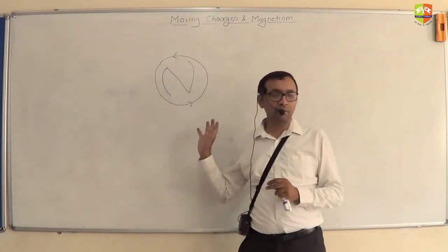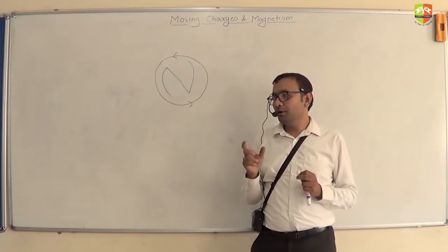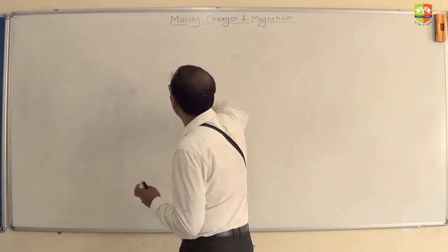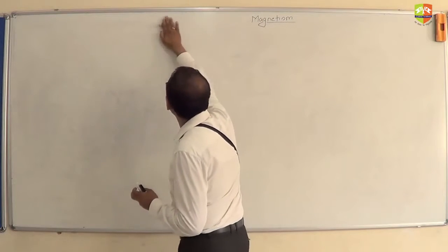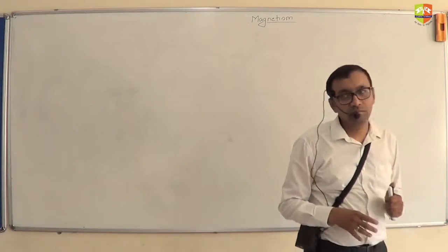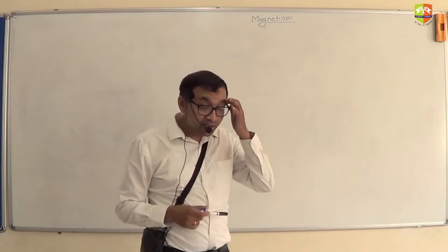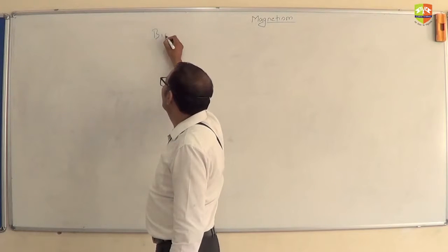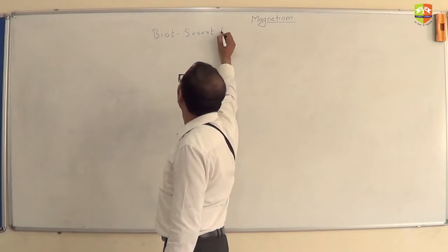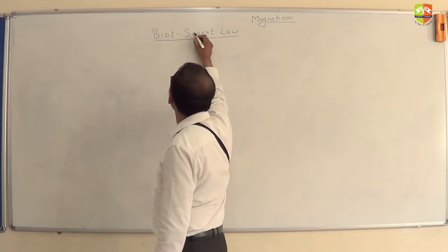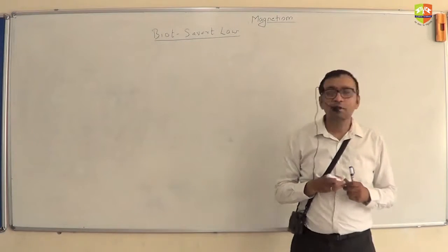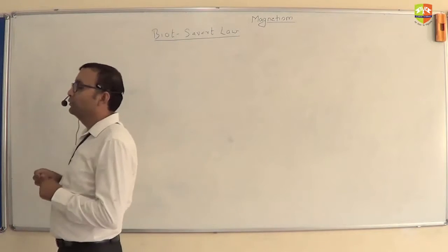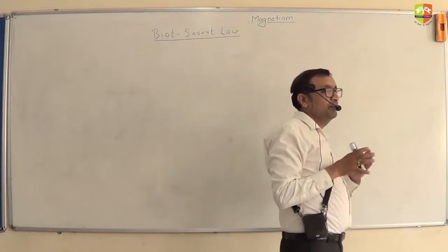So I am looking for a formula for the magnetic field in terms of a known current. This is where the story of magnetism for this chapter starts — the formula for the magnetic field in terms of current. We will divide the chapter into two parts: magnetism and moving charge. This magnetism part starts with a law called the Biot-Savart law.